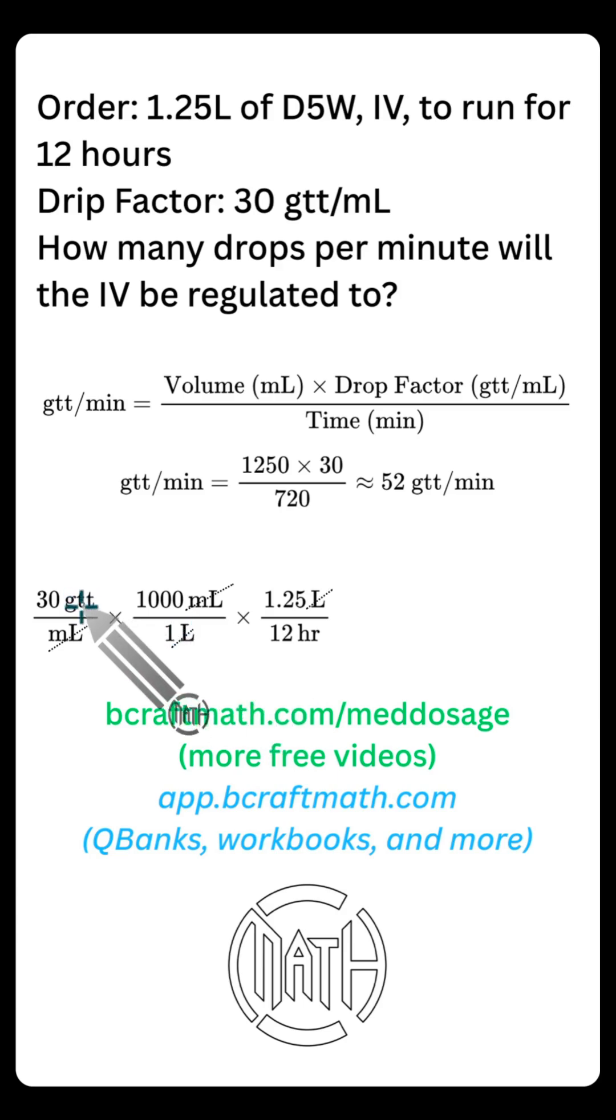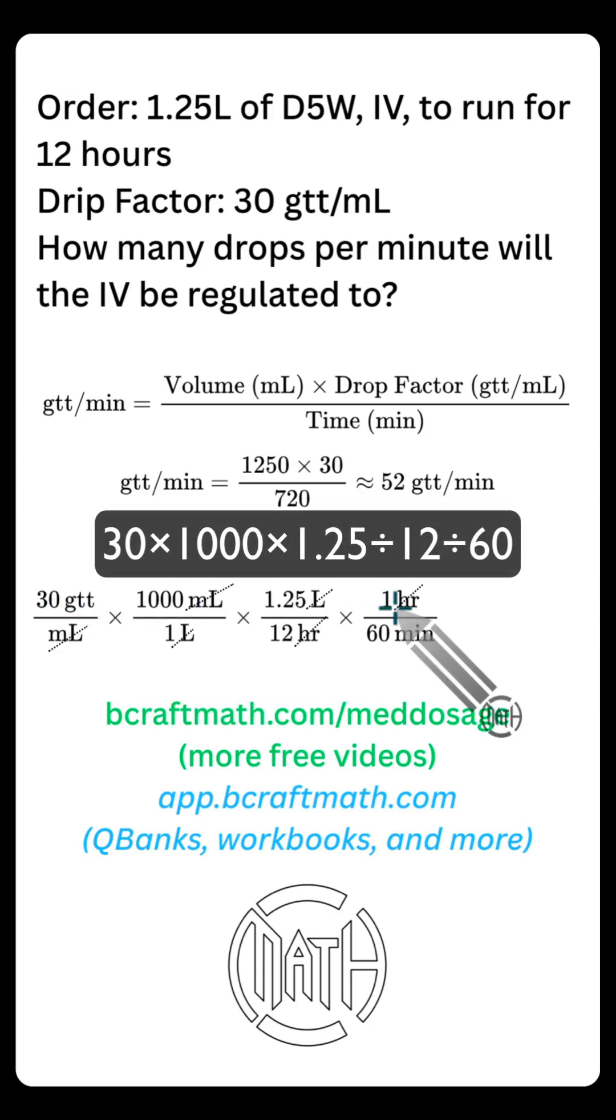Now, if we stopped here, we would have drops per hour, but we need drops per minute. So let's bring in one more conversion. One hour equals 60 minutes. This allows us to cancel out our hours. And now look at what we have. We have drops per minute. And if you multiply all of your top numbers and divide by all of your bottom numbers, round to the nearest whole number, you will get the exact same answer.